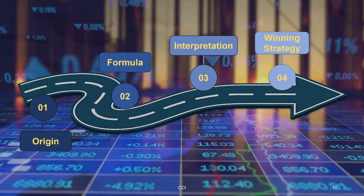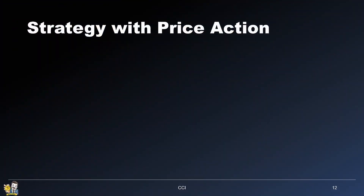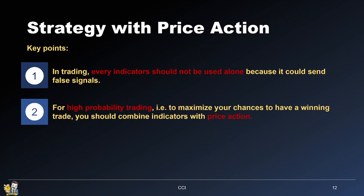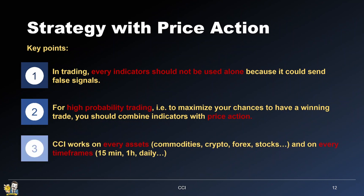Now let's look at a winning strategy that combines CCI with price action. Every indicator should not be used alone because it could send false signals. If you want high-probability trading, combine indicators with price action. CCI works great on every asset — commodities, crypto, forex, stocks — and on every timeframe, whether you're using a 15-minute chart, hourly, or daily.